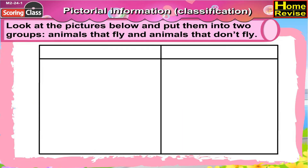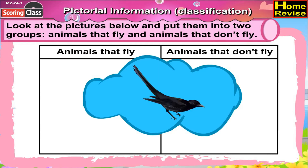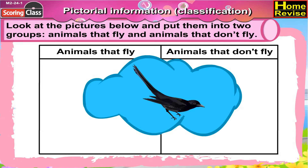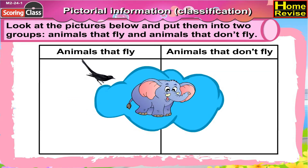The table has columns: animals that fly, and animals that don't fly. First and foremost, we have a crow. Does a crow fly? Yes it does, so write crow below animals that fly. Now it's the elephant. Can an elephant fly? Not at all, so it goes under animals that don't fly.